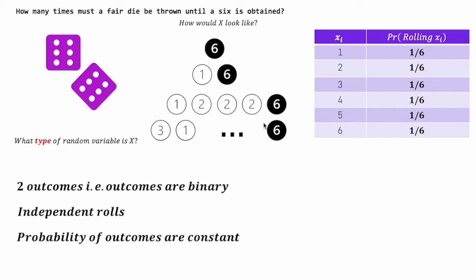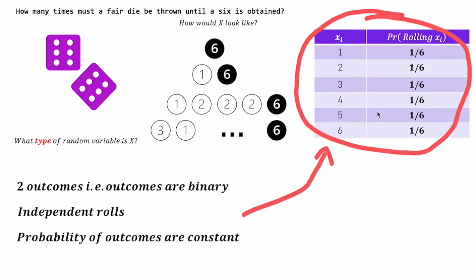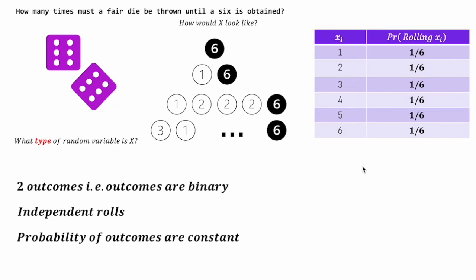Next, the probabilities of the outcome on each roll stay constant. So, that is to say, whether you are on the 5th or the 6th roll, it doesn't matter. The outcomes will always be this table, right? They're not going to change. It's not going to be on the 6th roll, the probability of getting 1 is suddenly, like, 2 out of 6, or something like that. So, the probabilities stay constant.